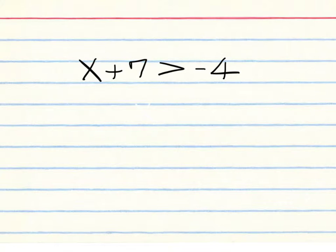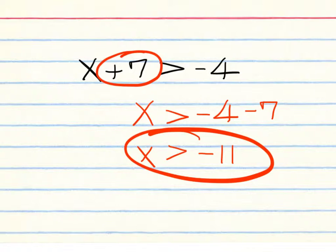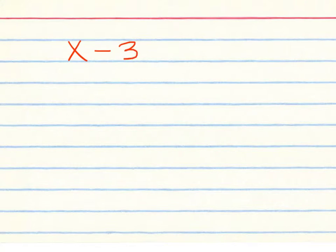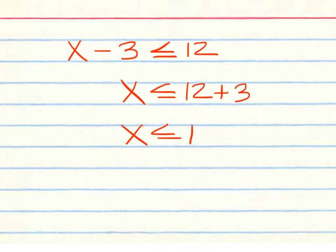Keep your x on the left and the negative 4 on the right. Move this over and make it minus 7, giving x greater than negative 11. For the next one, leave the x on the left — x is less than or equal to 15, with plus 3 on the right.